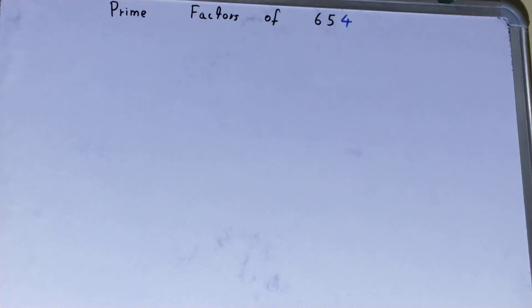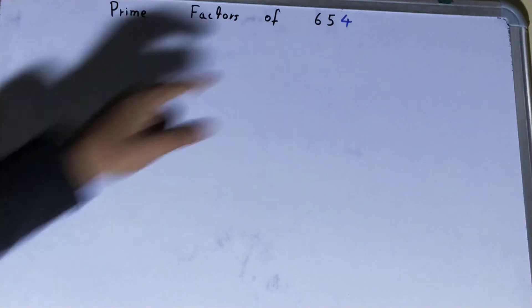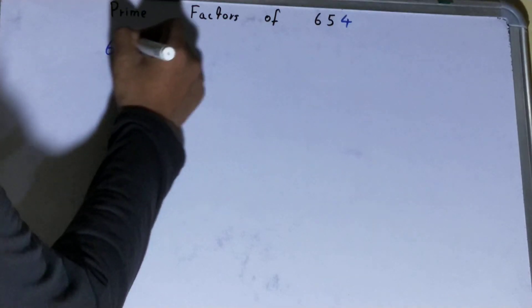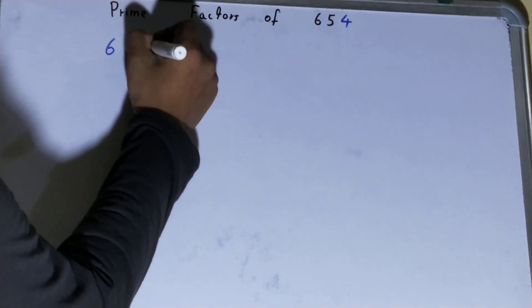Hello friends, and in this video I will be helping you with the prime factors of the number 654. Let's start. To find out the prime factors of the number 654, you need to write the number like this.